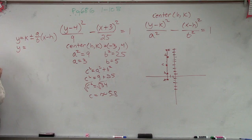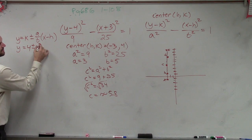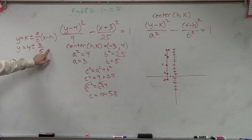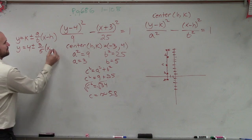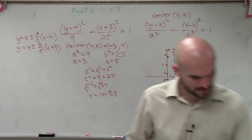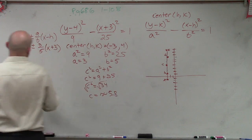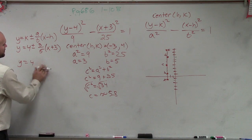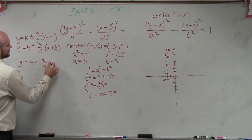So therefore, you have y equals k, which in this case is 4, plus or minus our a, which is 3, over our b times our x minus our h, which is negative 3. So it would be plus 3. Are you serious? I don't want to graph these. All right. So what I'm going to do is I'm going to do these separately. y equals 4 plus 3 fifths x plus 9 over 5.